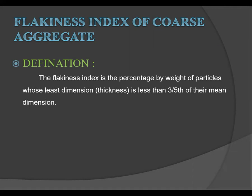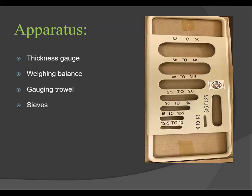Today's topic is the Flakiness Index of coarse aggregate. The Flakiness Index is the percentage by weight of particles whose least dimension — that is, the thickness — is less than three-fifths (0.6) of their mean dimension. The percentage by weight of particles whose thickness is less than 0.6 of their mean dimension is known as the Flakiness Index.